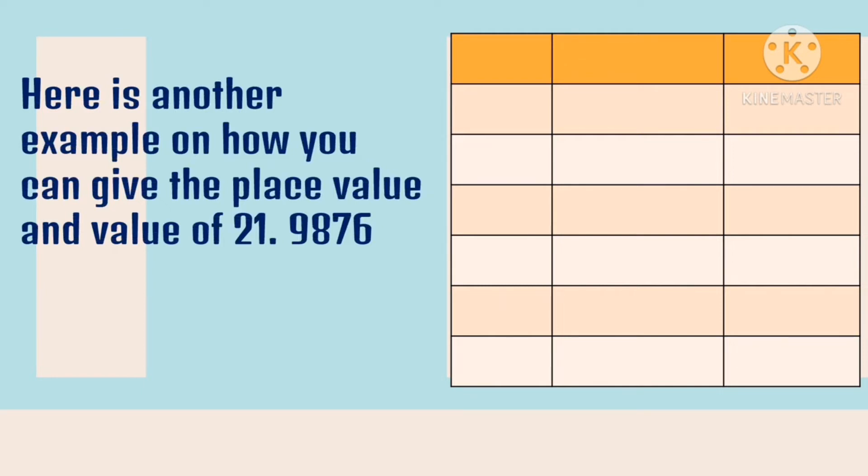Here is another example on how we can give the place value and value of 21.9876. Let's write the digit, the place value, and the value. The given digits are two. The place value of two is tens because it's a whole number, and the value of two is twenty. Then the digit one is in the ones place and its value is one.